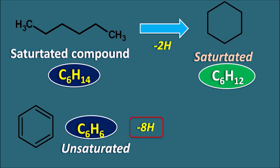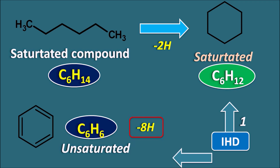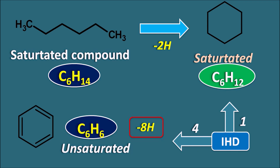Whenever an open-chain saturated compound is converted into a cyclic or aromatic compound, we observe a decrease in the number of hydrogens. This is indicated by the IHD. Since cyclohexane loses two hydrogens, its IHD is 2 divided by 2, which equals 1. Similarly, the IHD value for benzene is 8 divided by 2, which equals 4. Let us see why by looking at the IHD calculation.